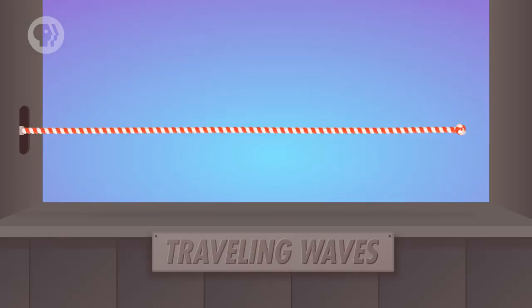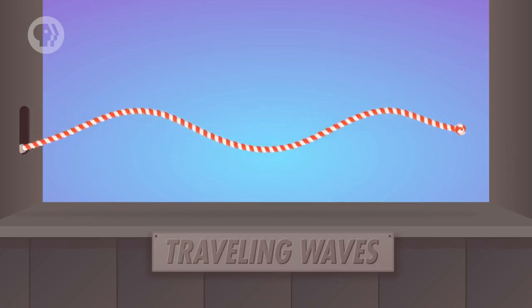Ropes and strings are really good for this kind of thing, because when you move them back and forth, the movement of your hand travels through the rope as a wave. By observing what happens to this rope when we try different things with it, we'll be able to see how waves behave. Including how those waves sometimes disappear completely. How's that for a magic trick?